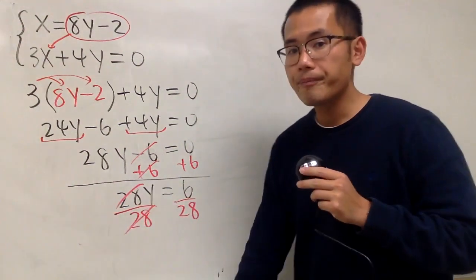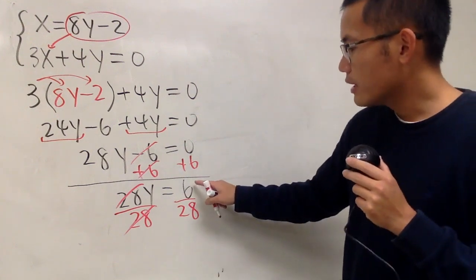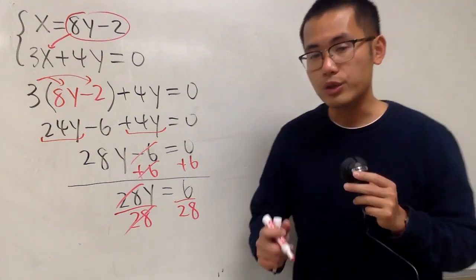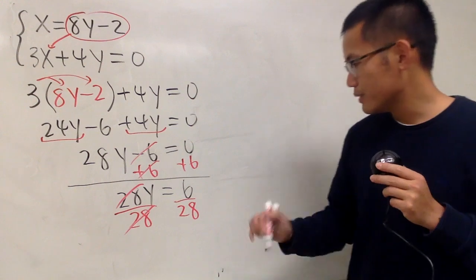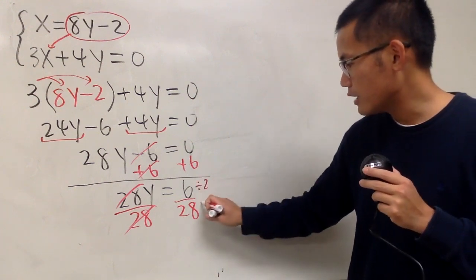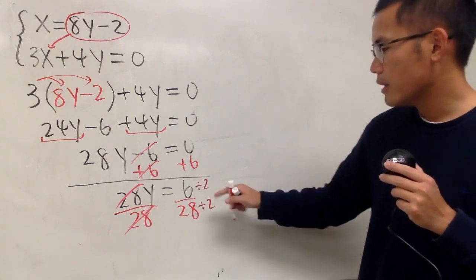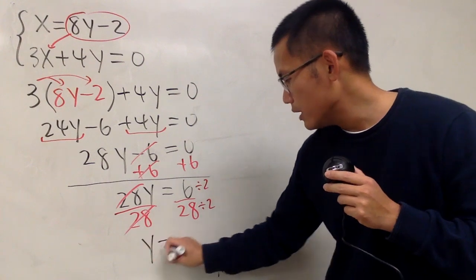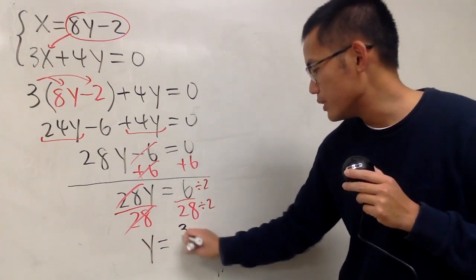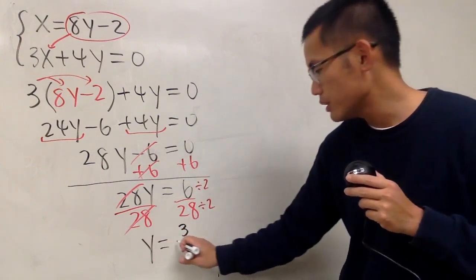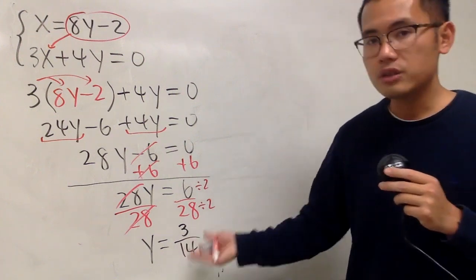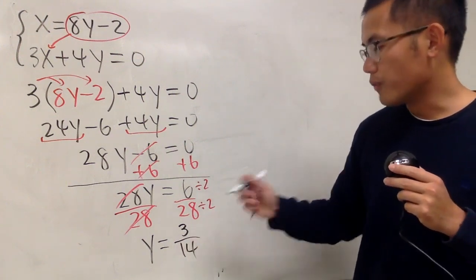So, that will be canceled. And here we have a fraction, 6 over 28. We can reduce this by 2. So, I'll divide this by 2. Likewise, I'll do that right here. And we see, y will be 6 divided by 2 is 3. 28 divided by 2 is 14. So, y is equal to 3 over 14.